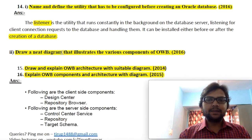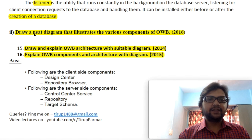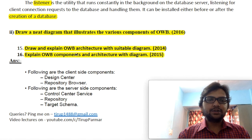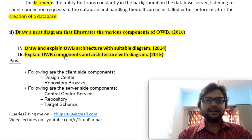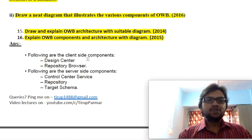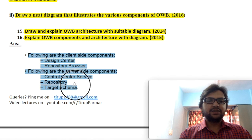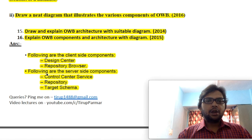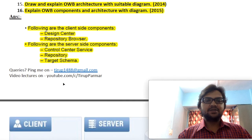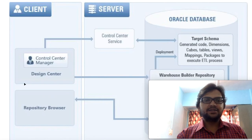Now the main part: the second part of this question — draw a neat diagram illustrating the various components of Oracle Warehouse Builder. In 2014 they also asked to draw and explain the architecture of Oracle Warehouse Builder with a suitable example, and 2015 had the same type of question. On the client side we have two things: Design Center and Repository Browser. On the server side we have three things: Control Center Service, Repository, and Target Schema. Let's discuss them one by one.